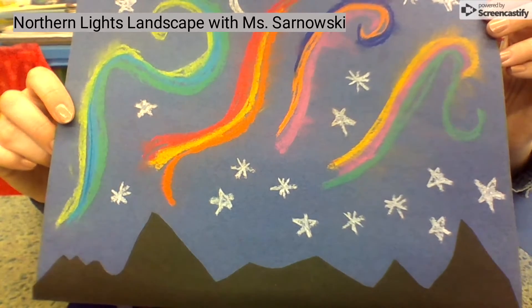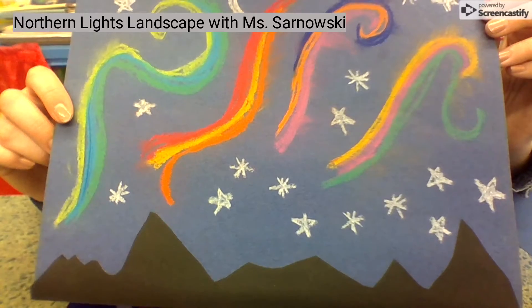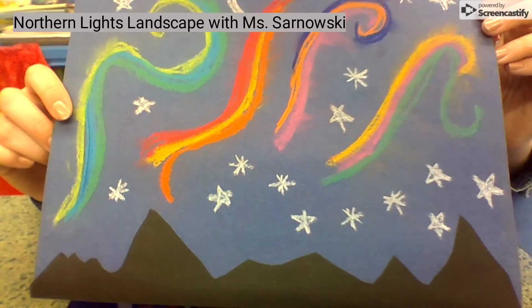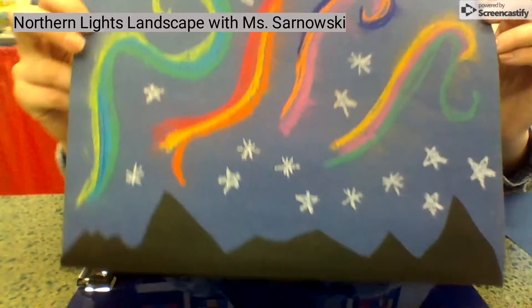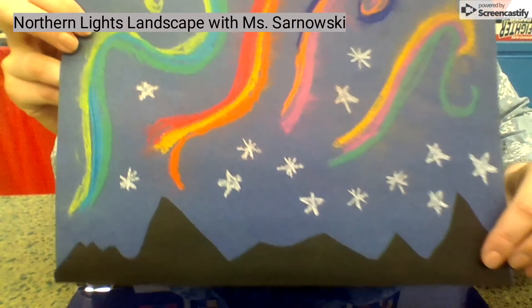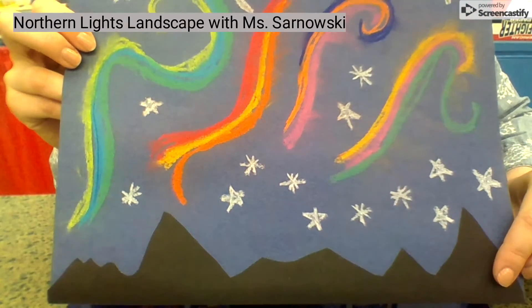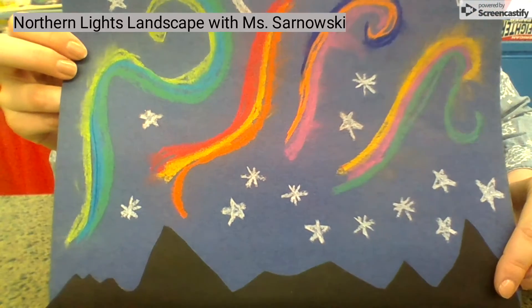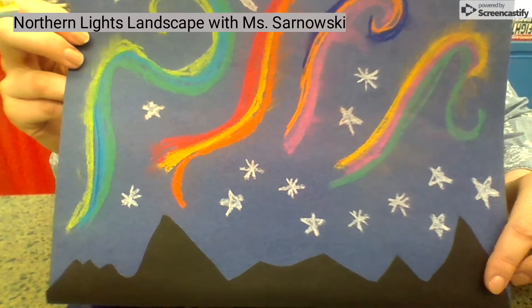A landscape is any type of artwork of the land. Today we're going to be making a landscape that looks like it's a silhouette, meaning it's in shadow because our northern lights are so bright and glowing. Let's get started.